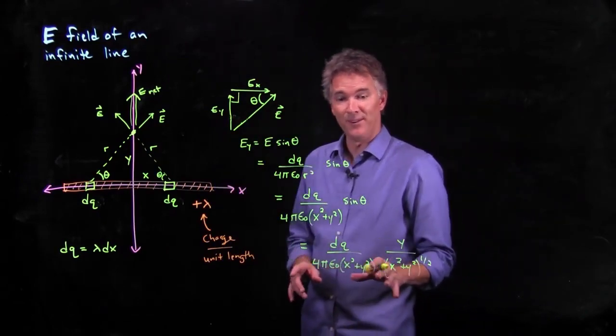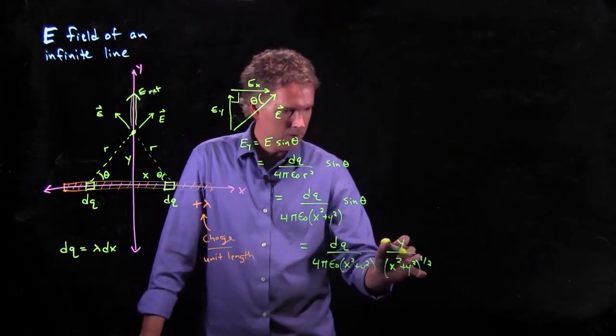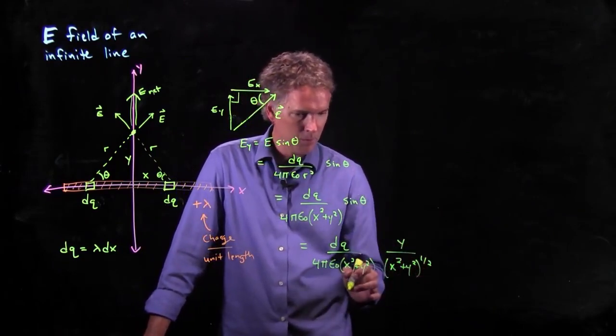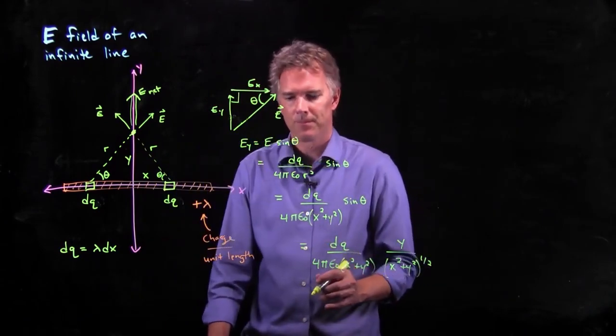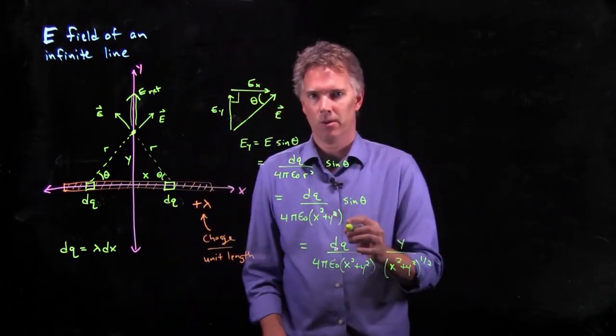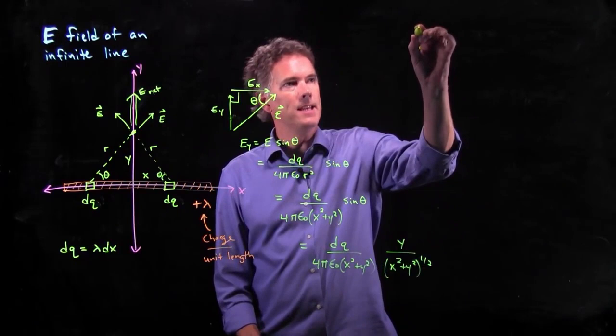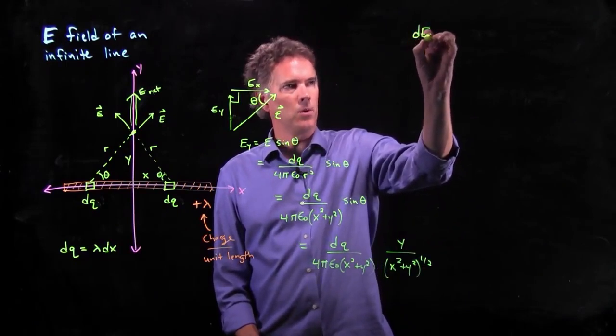I told you it was a little complicated, right? x squared plus y squared to the 1, x squared plus y squared to the 1 half. It looks like we can write out this e sub y. And to be technically correct, we're going to call this d e sub y.